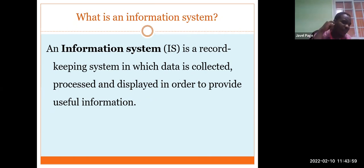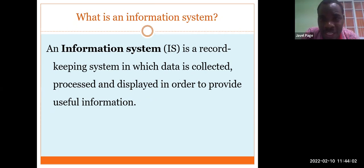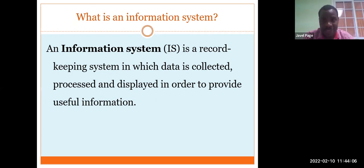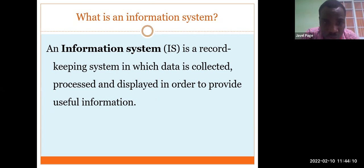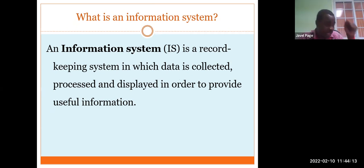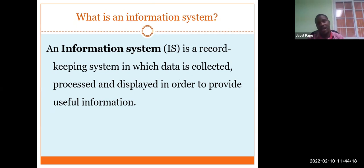Another thing about information systems we have to know is that an information system is a record-keeping system in which data is collected, processed, and displayed in order to provide useful information. It is a system used to collect data, and once you collect the data, you analyze, process, and manipulate it to give out information to users.